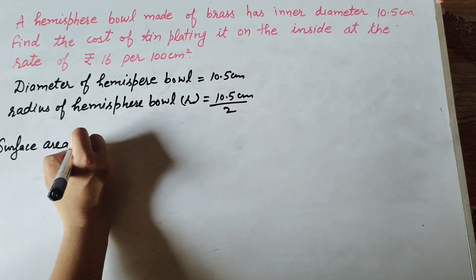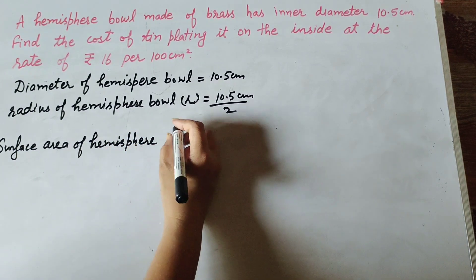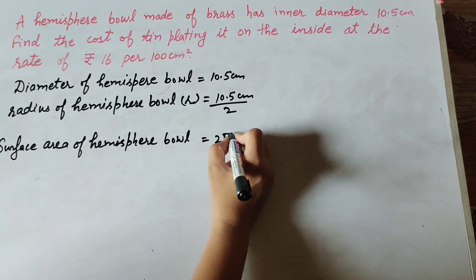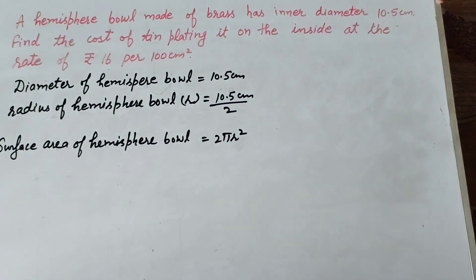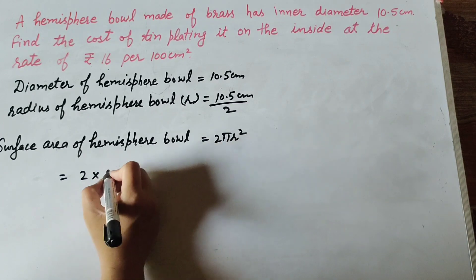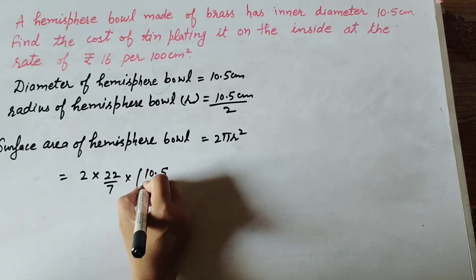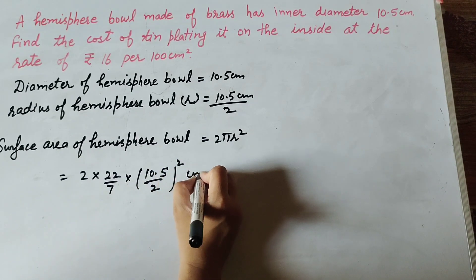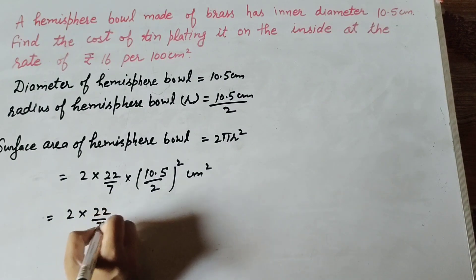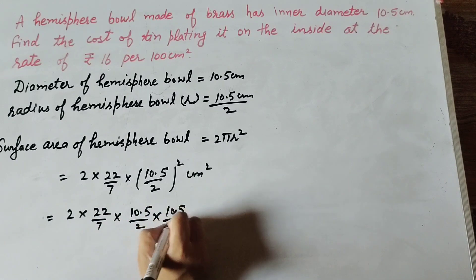We find the surface area of the hemisphere bowl. We know the formula to find the surface area of a hemisphere bowl — it is 2πr². It is equal to 2π, where π is 22 over 7, and r is the radius, which is 10.5 over 2, squared, in centimeter square. So it is equal to 2 into 22 over 7, multiplied by 10.5 over 2 into 10.5 over 2, in centimeter square.